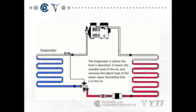Then you have the evaporator. The evaporator is where the heat is absorbed. It lowers the sensible heat of the air surrounding it and removes the latent heat of the water vapor — which is humidity — that is in the air. The principle behind the evaporator is that this low-pressure refrigerant coming in has a boiling point lower than the air surrounding it.